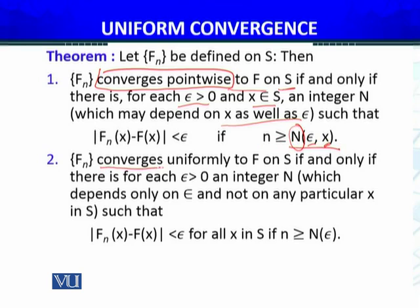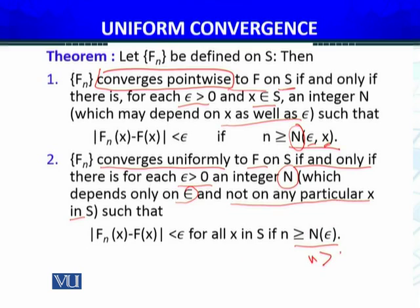The sequence of functions will be called converges uniformly to f on S if and only if: there is, for each epsilon greater than zero, an integer N which depends only on epsilon and not on any particular value of x in S, such that |fn(x) - f(x)| less than epsilon for all x in S, if n is greater than capital N. Capital N jayo, wo depend karta hai now only on epsilon — jaise previous module mein humne example ki thi ke humara N jayo tha wo greater than minus log of epsilon — is se aya tha ke n agar is real number se greater hoga, toh humara sequence of functions jayo tha, wo converge karega uniformly to f of x equals identically zero defined function pe.